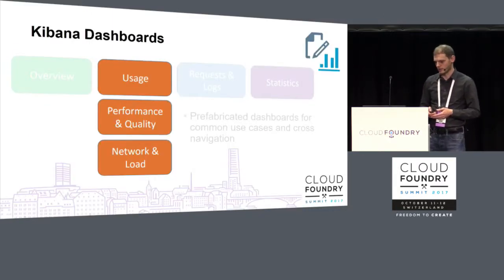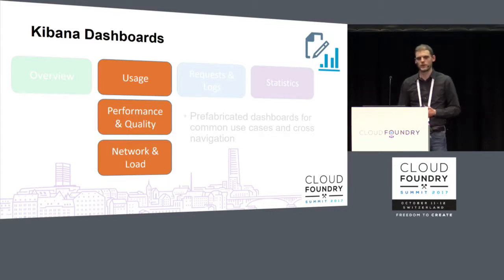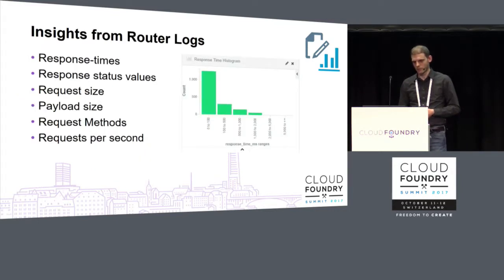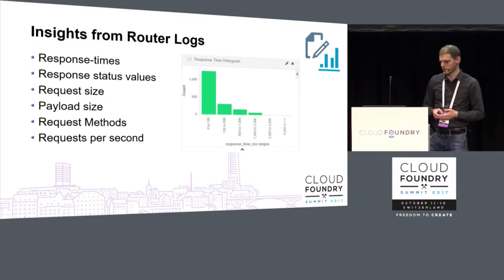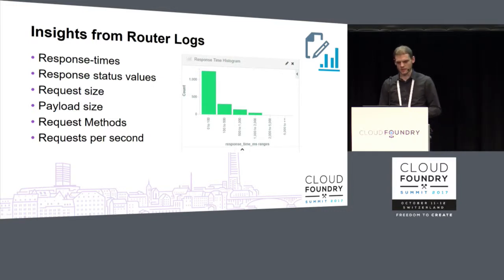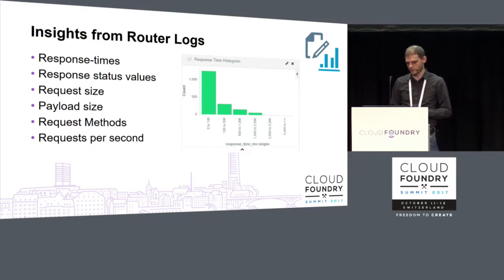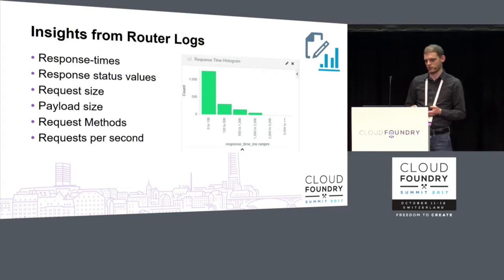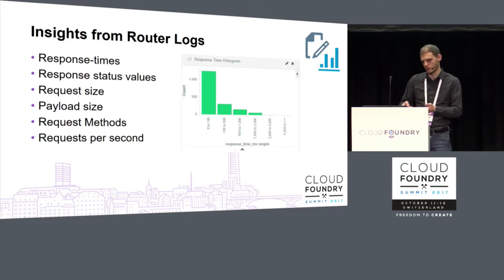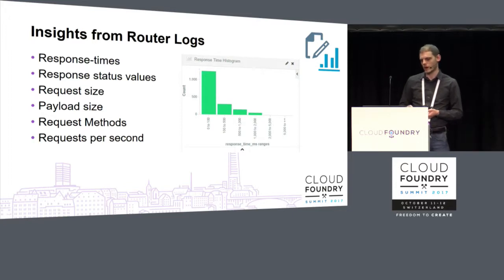The next dashboards are the router log-based dashboards. The insights we gain from router logs include response times, request sizes, and so on. We can also aggregate them in a useful way and create histograms — like the one you can see here — which in one glimpse shows you if you have an issue with long response times. It shows the distribution of response times, and if you had a component that takes very long to respond, this would show up as a bar on the right side of the graph.